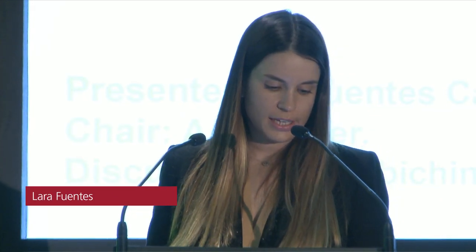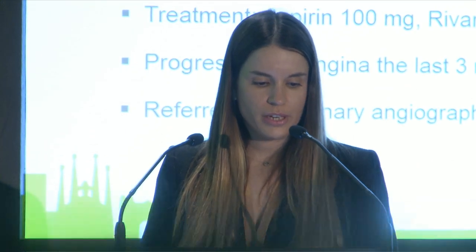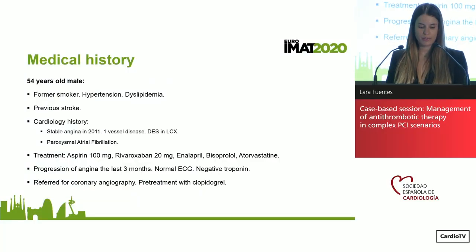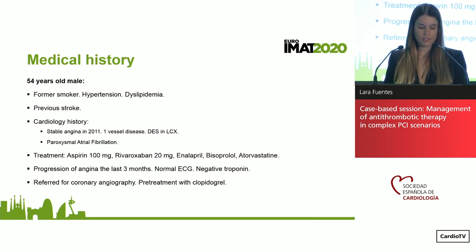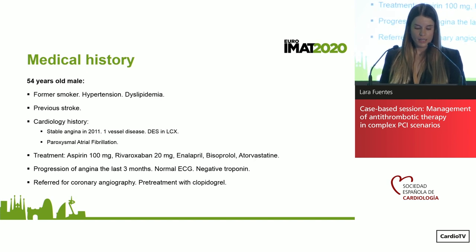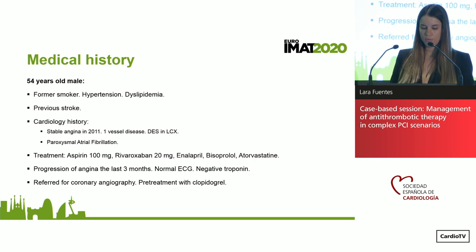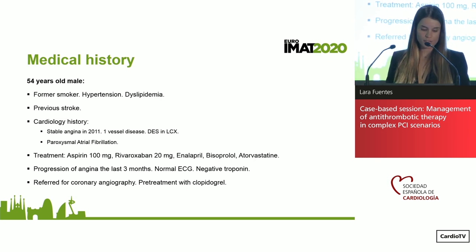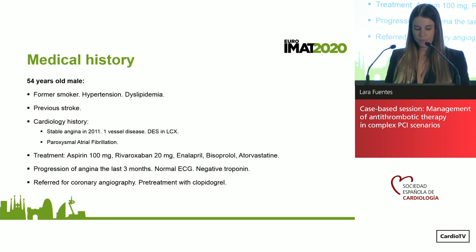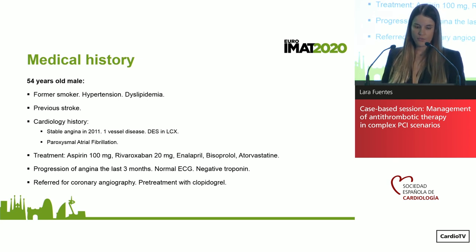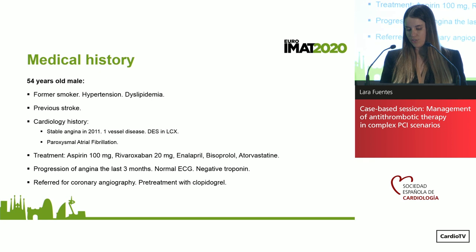This is a 54-year-old male, former smoker, with history of hypertension and dyslipidemia. He has a previous stroke. His cardiology history starts in 2011 with stable angina; angiography showed one-vessel disease treated with a drug-eluting stent in the left circumflex. The patient also has paroxysmal atrial fibrillation and is treated with aspirin, rivaroxaban 20mg, enalapril, bisoprolol, and atorvastatin. He is referred for coronary angiography due to progression of angina over the last three months, with normal EKG and negative troponin, and received pre-treatment with clopidogrel.